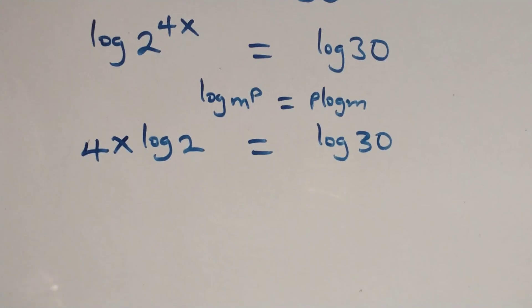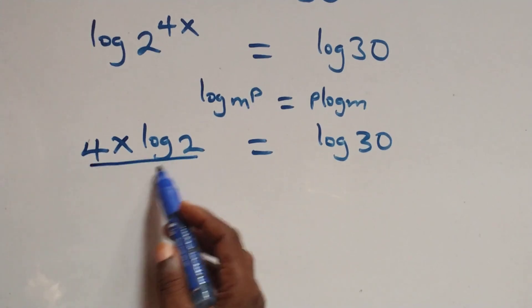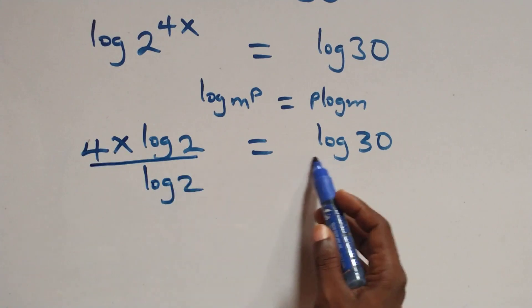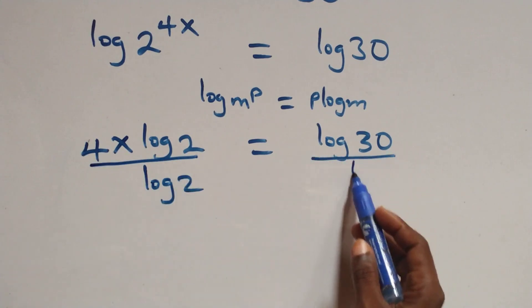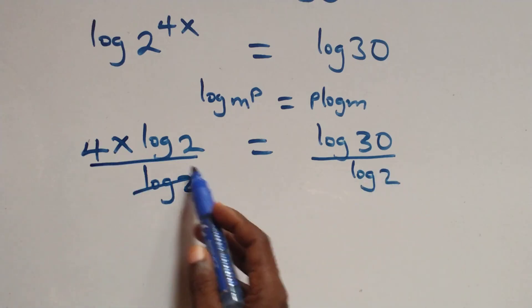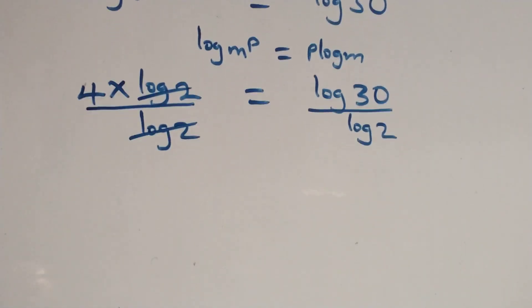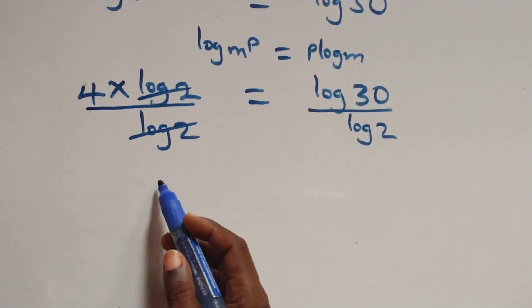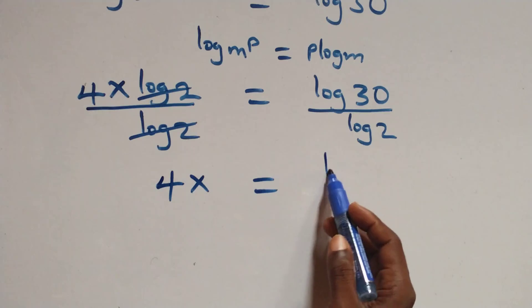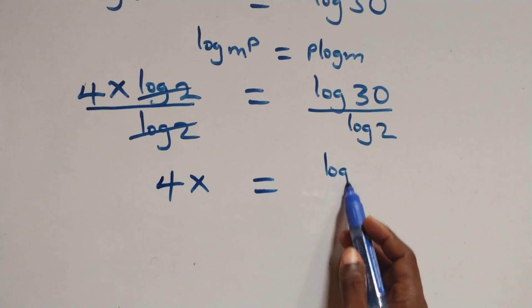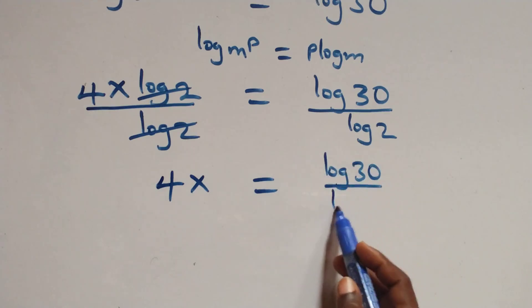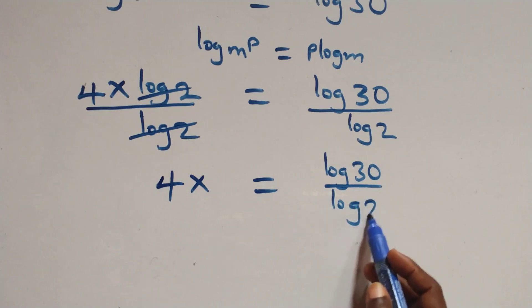Here log 2 cancels each other, and we have 4x equals to log 30 over log 2.